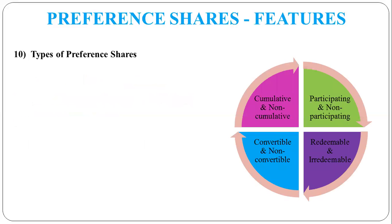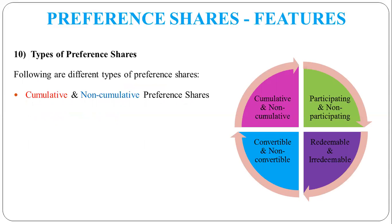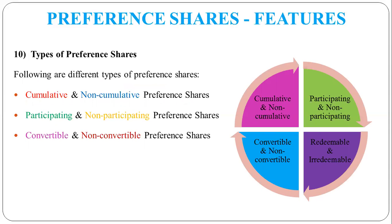Now, the types of preference shares — there are a total of eight types. The first is cumulative and non-cumulative. Second is participating and non-participating. Third is convertible and non-convertible. And fourth is redeemable and irredeemable. In this video I will not explain the meaning of each type, because the topic of types of preference shares will be covered in detail in a separate video where I will explain the meaning of all eight types.